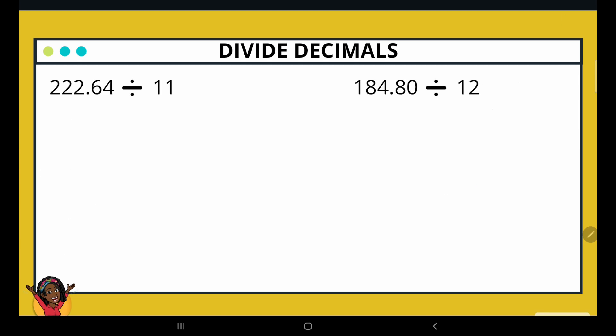Alright, let's go ahead and take a look at these next two examples. So I'm going to first draw my division house. And I'm putting 222.64 on the inside and 11 on the outside since it's my divisor. Now we're going to just follow our regular protocol for division. 11 cannot go into 2. However, it can go into 22. But before I can start dividing, I must remember to place my decimal point in my quotient right above where it is in the dividend.